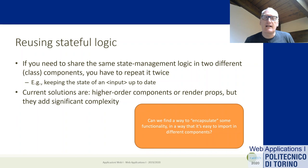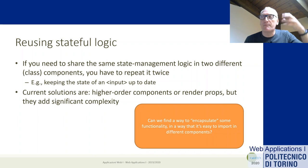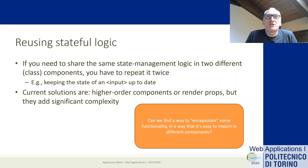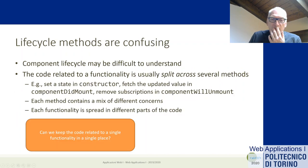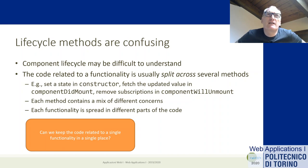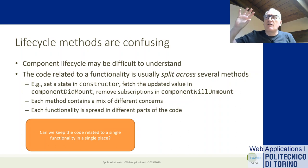There are tricks for sharing logic, like higher-order components where a component returns a new component, or render props where you pass a function to do the rendering job. But these are perceived as extra complexity for a simple task. If you want to share functionality between two components, there's currently no easy way to do that. Also, lifecycle methods tend to split code into different parts.